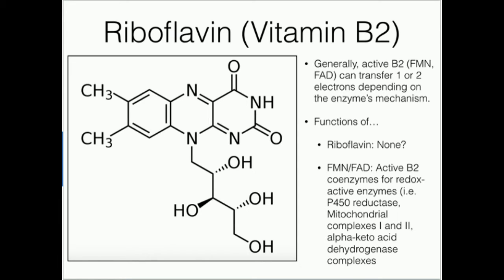What are the functions of these various ones? Riboflavin really doesn't have any functions by itself — it has to be transformed to have any functions. It's going to need to be converted into its two later derivatives: flavin mononucleotide and flavin adenine dinucleotide. FMN and FAD are the two bioactive B2 coenzymes, and they're going to be used generally for redox chemistry, transferring electrons and so on.